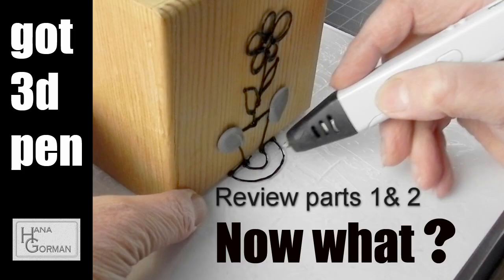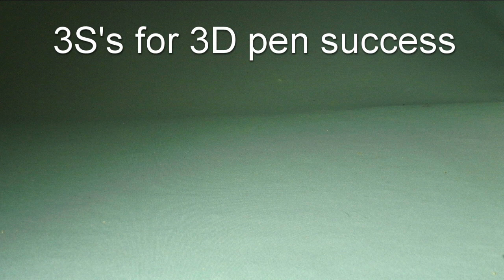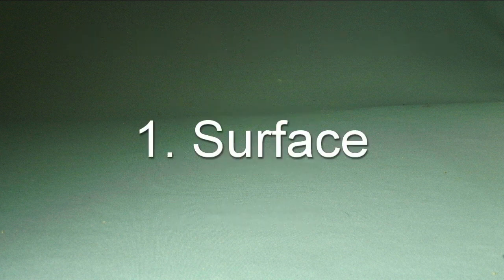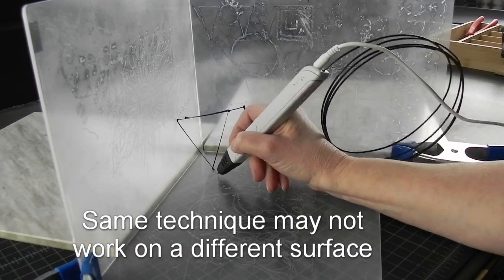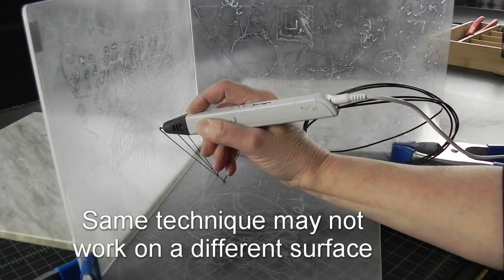If you have seen my two videos, Beginner's Guide to 3D Pen Use Part 1 and 2, and if you haven't, the links are in the description, you may remember I talked about the three S's for success with 3D pen: Surface, Strategy, and Stability. We are not going to talk about Surface today because I already have two videos about it. The links are also in the description.